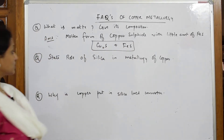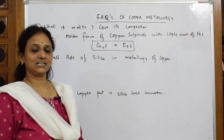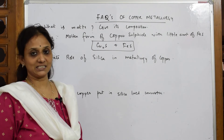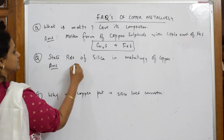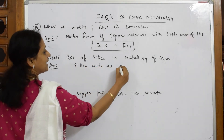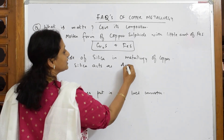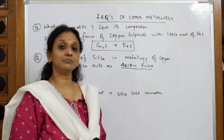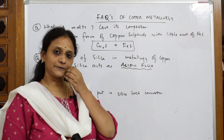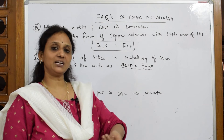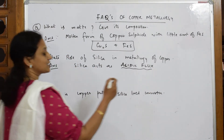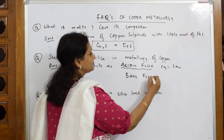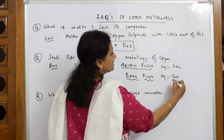What is the role of silica in metallurgy of copper? We used silica in the smelting process, after roasting. When writing such answers, first write: silica acts as acidic flux. Acidic flux is obtained from Lewis acids — like HCl, H₃PO₄, sulfuric acid. SiO₂ is an acidic flux. Examples of basic flux include calcium oxide and magnesium oxide.